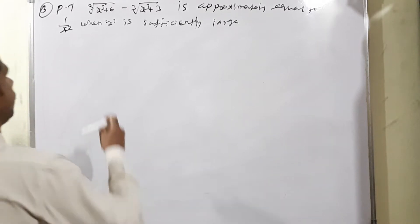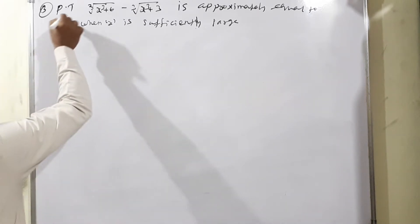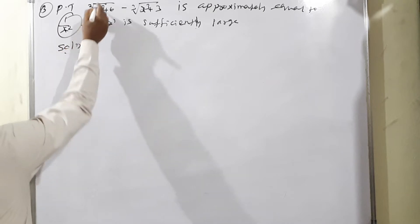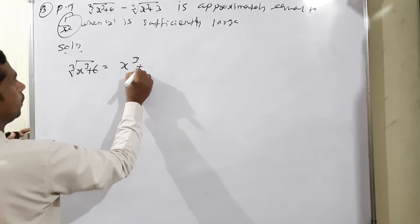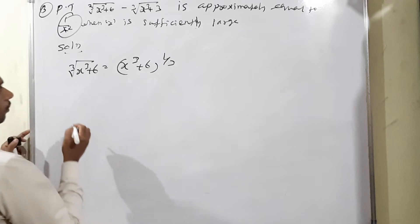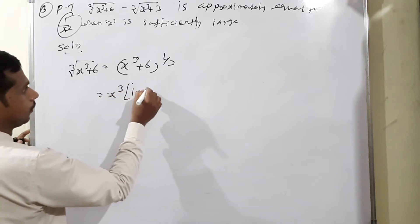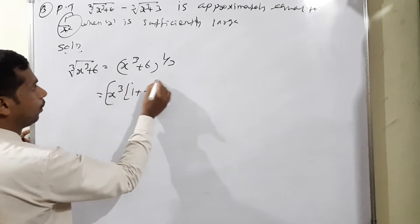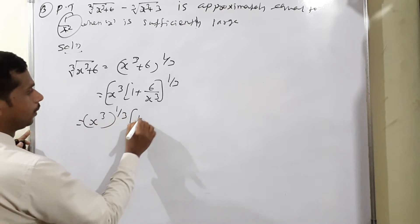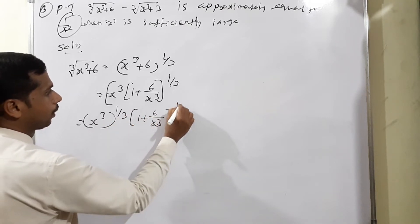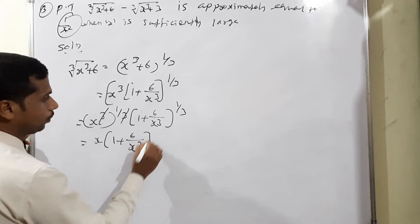Question 3: Prove that cube root of (x³ + 6) minus cube root of (x³ + 3) is approximately equal to 1/x². Solution: First, cube root of (x³ + 6) = (x³ + 6)^(1/3). Taking x³ as common outside: x³^(1/3) × (1 + 6/x³)^(1/3) = x × (1 + 6/x³)^(1/3).